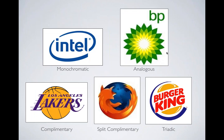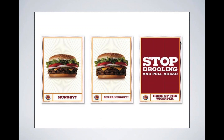Going back to Burger King: the logo has yellow, red, and blue — the primary colors. When you get into the packaging and branding, you see all the signs using those colors, all the packages using those colors. Not just in the logo but in everything — if you went to the restaurants, you would see this color everywhere. So it's establishing the personality and driving that consistency into your memory.